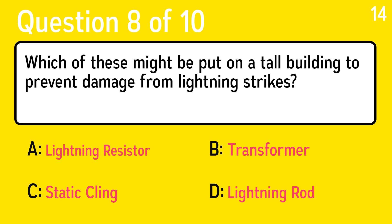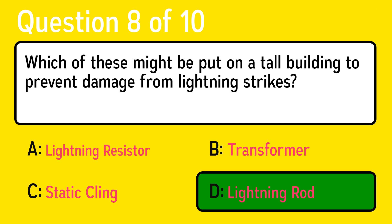Question 8, which of these might be put on a tall building to prevent damage from lightning strikes? The correct answer is D, lightning rod.